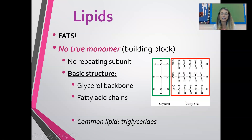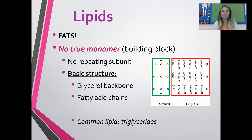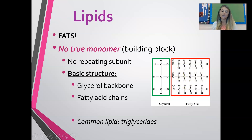Lipids are sort of the exception to the rule — they do not have a true monomer. They don't have a subunit that gets repeated over and over, but they do all have the same basic structure. All lipids have a glycerol backbone, and attached to that are fatty acid chains. What you're looking at here is a triglyceride — three fatty acid chains attached to one glycerol backbone. That's a really common lipid; you may have heard that phrase before.